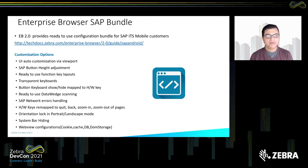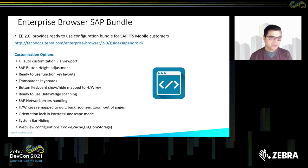Now I'll talk about Enterprise Browser SAP Bundle. Using SAP on mobile devices brings its own challenges. The UI does not scale well — buttons in SAP do not scale well. SAP uses function key layouts and Android does not provide function keys. Transparent keyboards are often better than a keyboard taking up the screen. You also need a keyboard that can be shown or hidden and mapped to hardware keys, and the ability to use barcode scanning in the SAP bundle without writing any code.